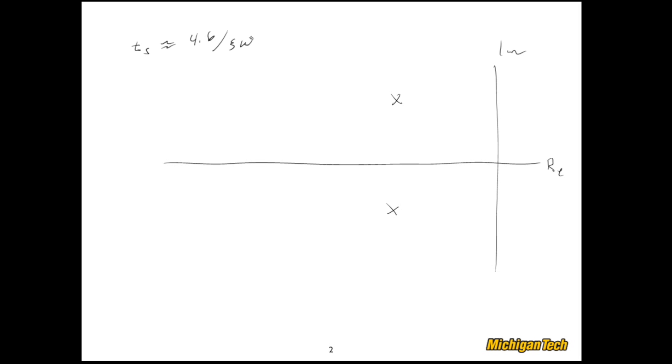So let's see, we had settling time is about 4.6 over zeta omega n. So this is only a function of zeta omega n and that's the distance that these poles are from the imaginary axis.